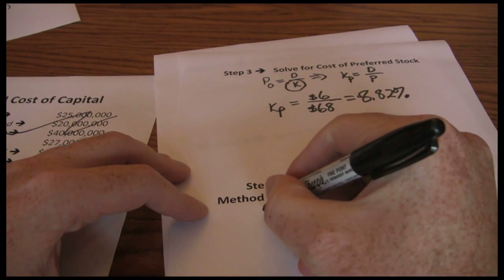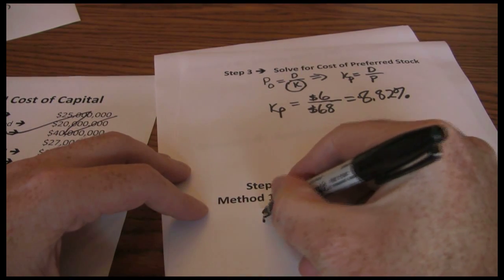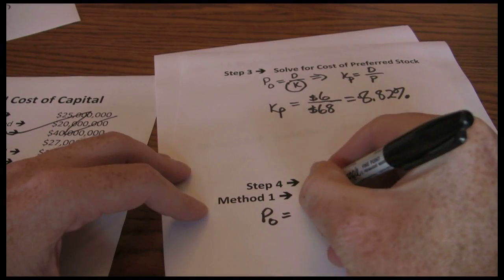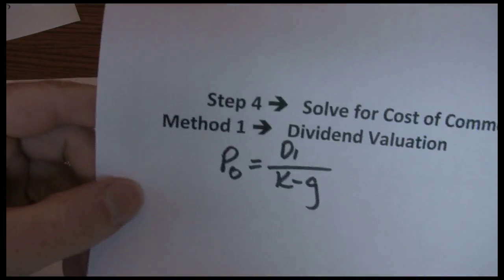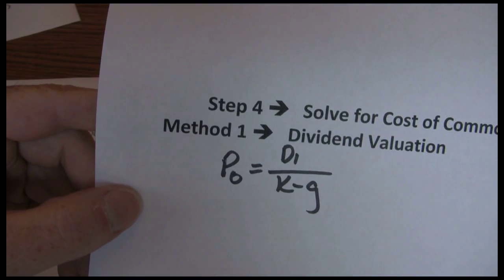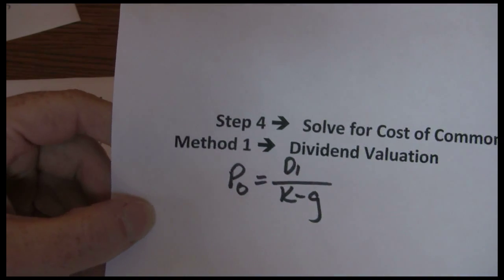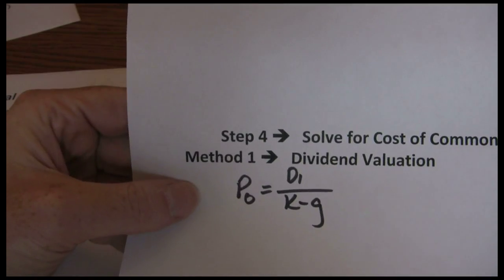But now since we're dealing with common stock, we're starting with the constant growth model instead of the no growth model, because common stock typically allows dividends to grow over time. Again, this required return is what we're solving for.